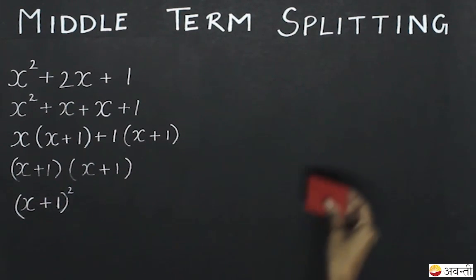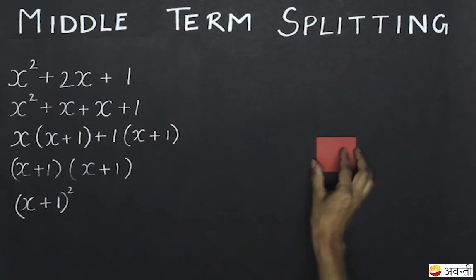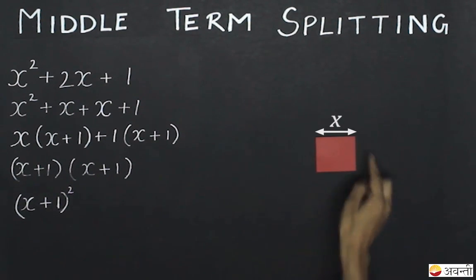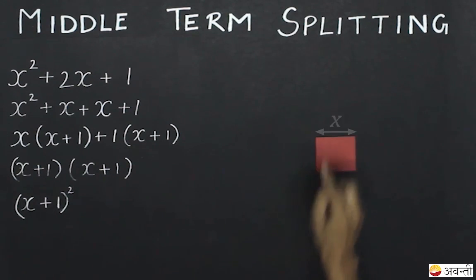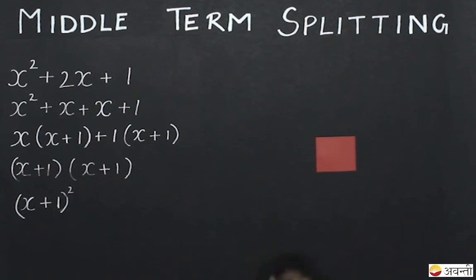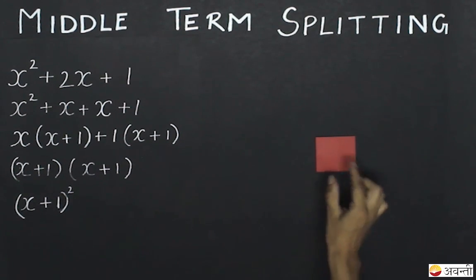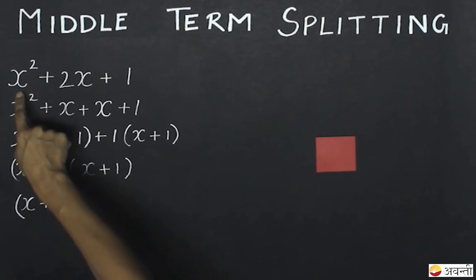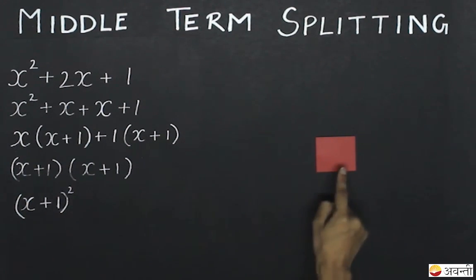Let's say I have a square with side x. The area of this square will be x squared. This means I can simply represent the term x squared with the help of this square.